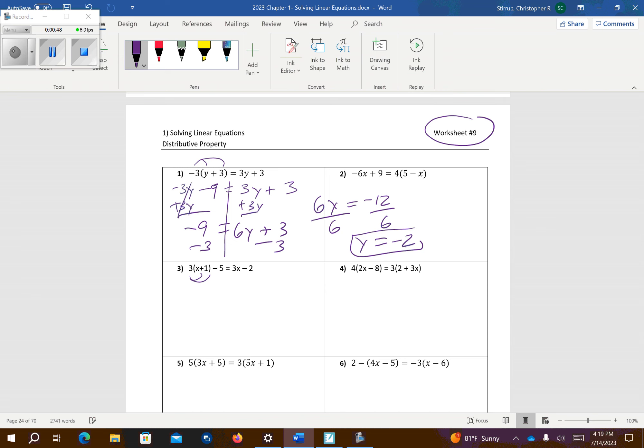Problem number 3, distribute. So I'm going to get 3x plus 3 minus 5 equals 3x minus 2. I'm going to combine those like terms together, so 3 minus 5 is negative 2. And look what's going to happen here. I'm going to subtract 3x from both sides, so those both cancel. So again, negative 2 is equal to negative 2. This is true. Being that's true, that means you have infinite solutions.